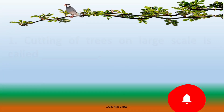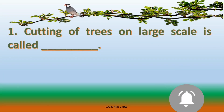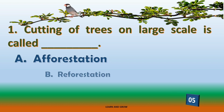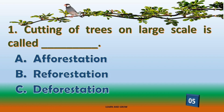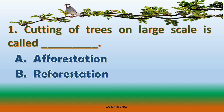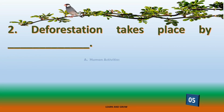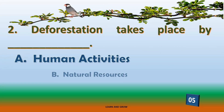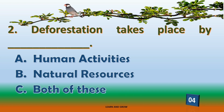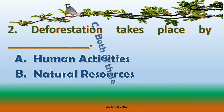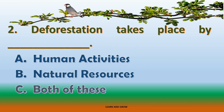Cutting off trees on a large scale is called — the right answer is option C: deforestation. Deforestation takes place by — the right answer is option C: both of these.